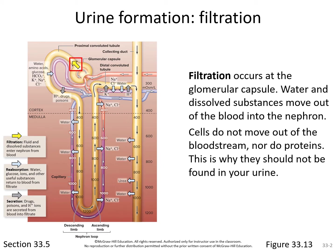Filtration occurs at the glomerular capsule. Looking at the diagram where the red box is, this is basically where the glomerular capsule is located. Water and dissolved substances move out of the blood into the nephron. Notice the incoming blood vessel leading into the glomerulus, and notice that the outgoing blood vessel is thinner. That's like putting a crimp in a hose — it raises the blood pressure, which drives substances from the bloodstream out into the nephron.